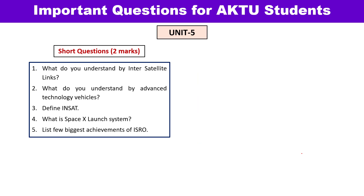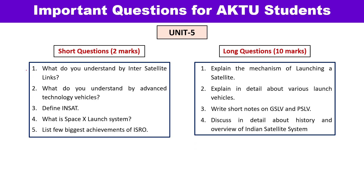Unit 5 is about innovation, trends, and the history and overview of the Indian satellite system. Short questions may include: what are inter-satellite links, what are advanced technology vehicles, define INSAT, what is the SpaceX launch system, and list the biggest achievements of ISRO. This is a completely theoretical unit. For long questions, you may be asked about the mechanism of launching a satellite — there are three processes: direct launch, launch by one velocity increment, and launch by two velocity increments. Different launch vehicles can also be explained.